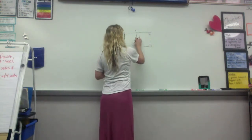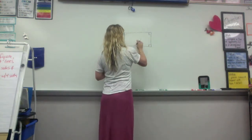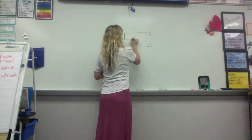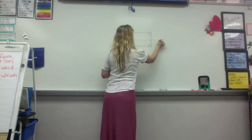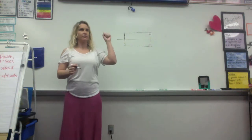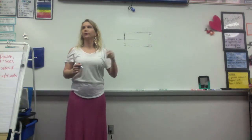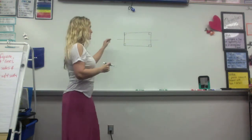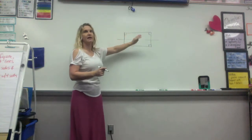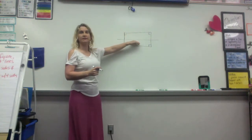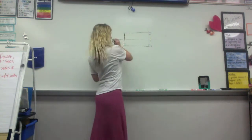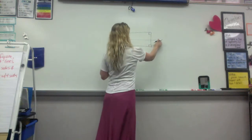What if I take this same figure and I draw that? Does this have a line of symmetry, yes or no? Yes, it does. This is exactly the same as this. So it has a vertical line of symmetry, and it has a horizontal line of symmetry.